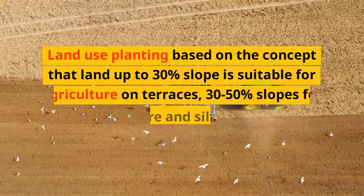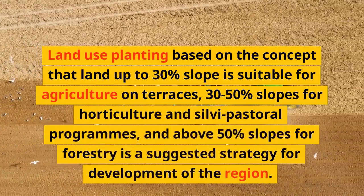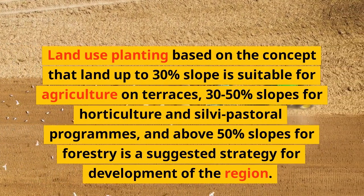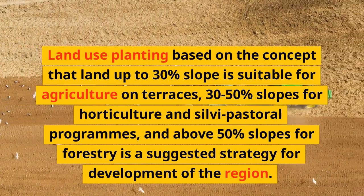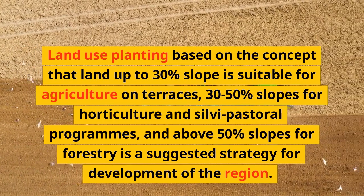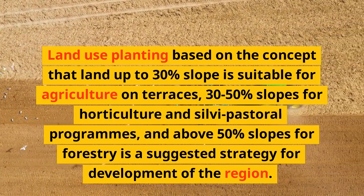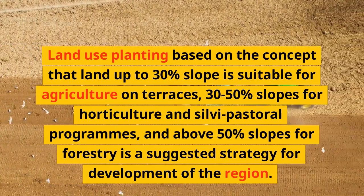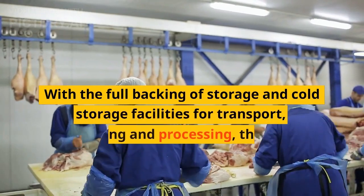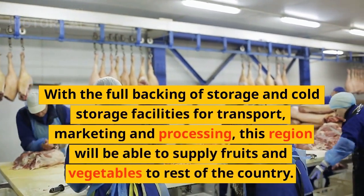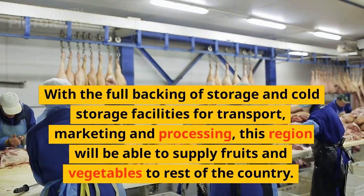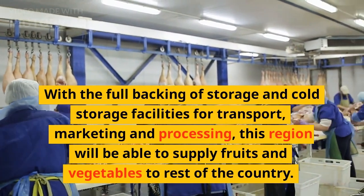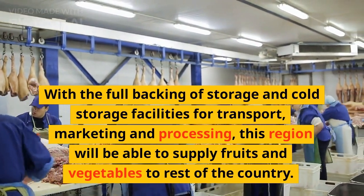Land use planning is based on the concept that land up to 30% slope is suitable for agriculture on terraces, 30–50% slopes for horticulture and silvi-pastoral programs, and above 50% slopes for forestry, as a suggested strategy for development of the region. With the full backing of storage and cold storage facilities for transport, marketing and processing, this region will be able to supply fruits and vegetables to the rest of the country.